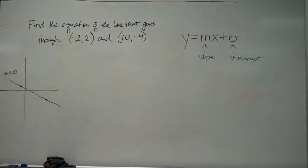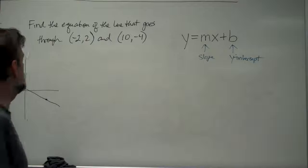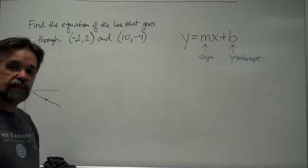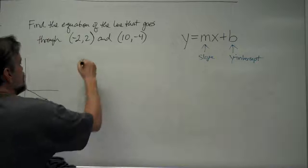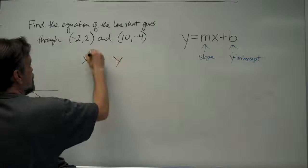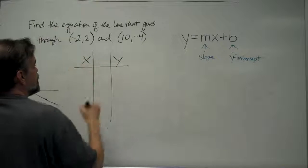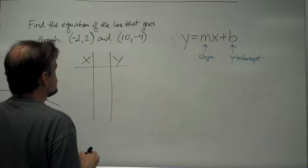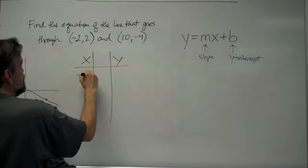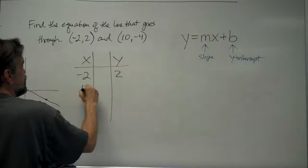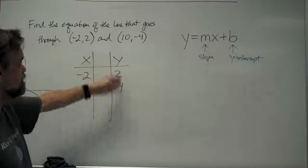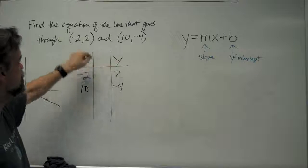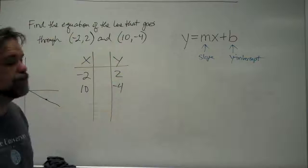We have the equation of this line that goes through the points (-2, 2) and (10, -4). Let me give you a surefire way that always works for finding the equation of this line. We're going to make a three-column chart here. Let's put the first point here, the second point here. So, here are our x-coordinates, here are our y-coordinates. First point is (-2, 2). Second point is (10, -4).